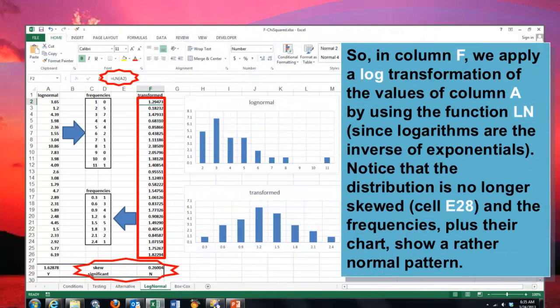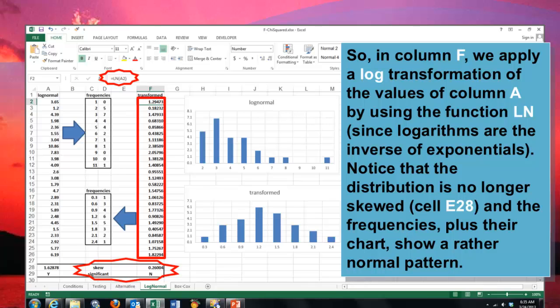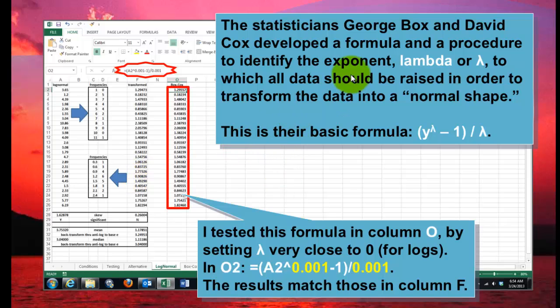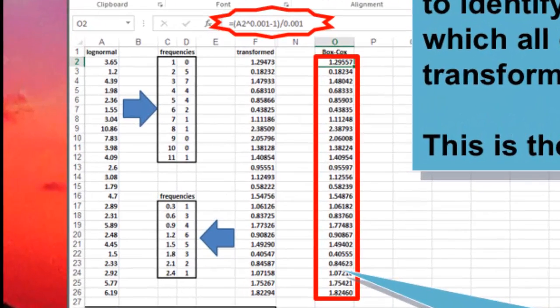So what is lambda? In this case, we did the transformation with a natural logarithm function. And then I tested it by using another kind of formula. The statistician George Box and David Cox developed a formula to identify the exponent lambda. And their basic formula is y values to the power of lambda minus 1 divided by lambda. And I used that formula in column O. So in O2 is A2 to the power of a very small value close to 0, minus 1, divided by that lambda factor. And it comes very close to what the natural logarithm function did.